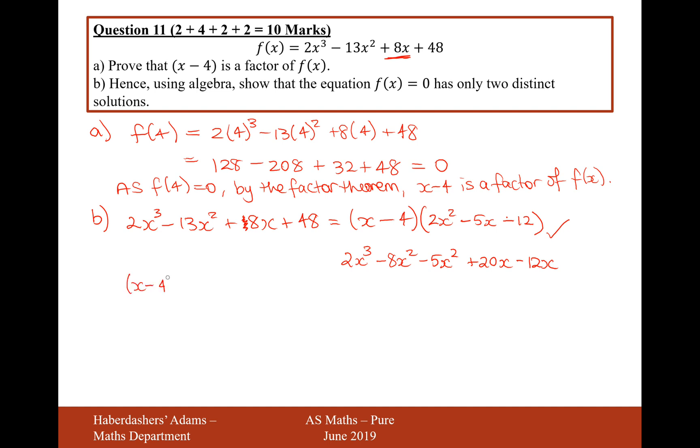Now let's factorise even further to get the distinct solutions. So, it's going to be 2x squared minus 5x minus 12. Let's factorise even further. It's going to be x minus 4 and then it's going to be 2x and a bracket, x and another bracket. Let's think about what numbers need to go inside the bracket. So, it's going to be a minus 4 and a plus 3.